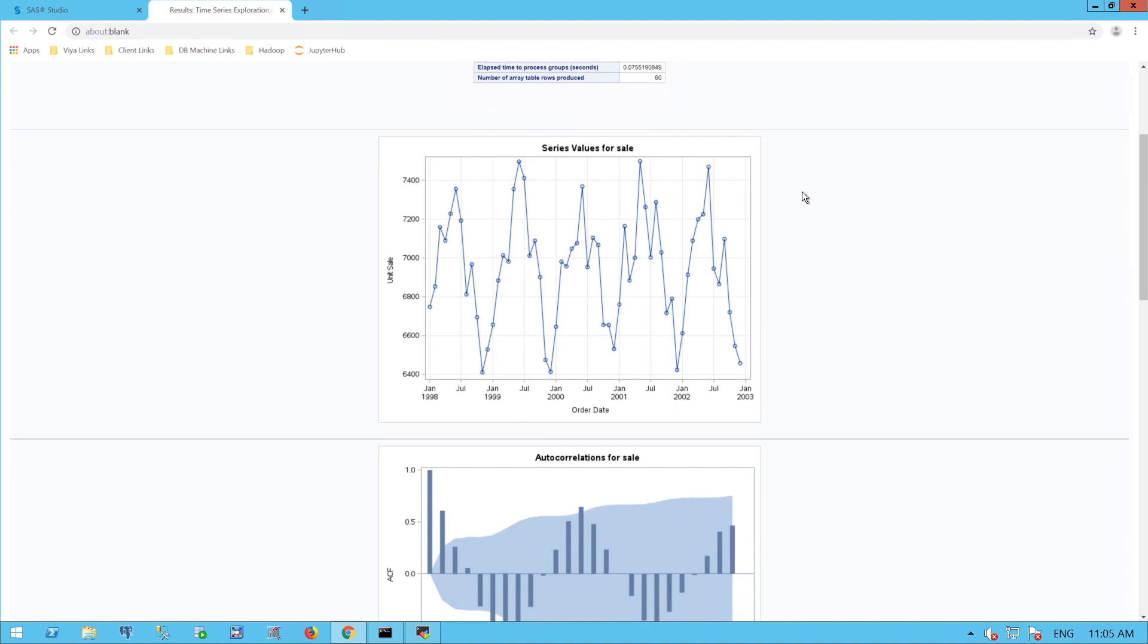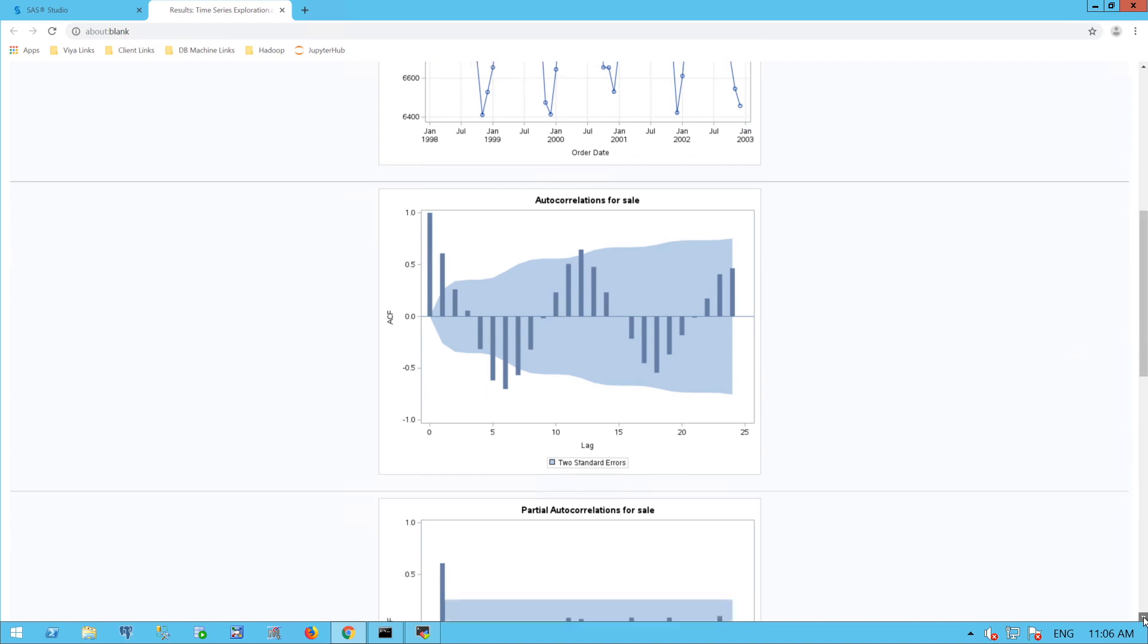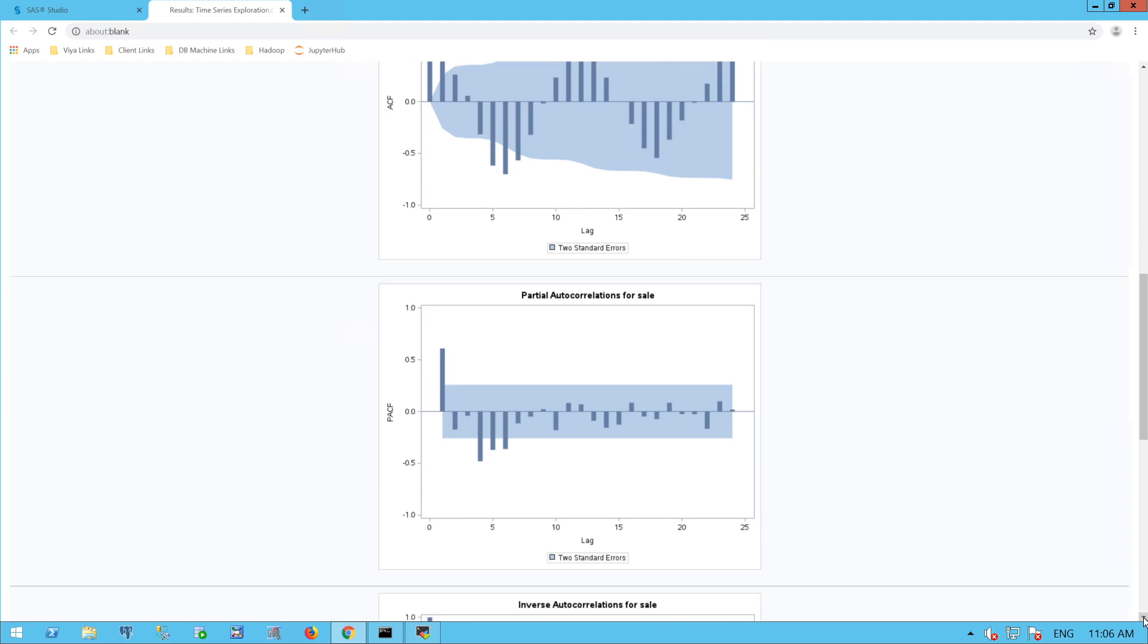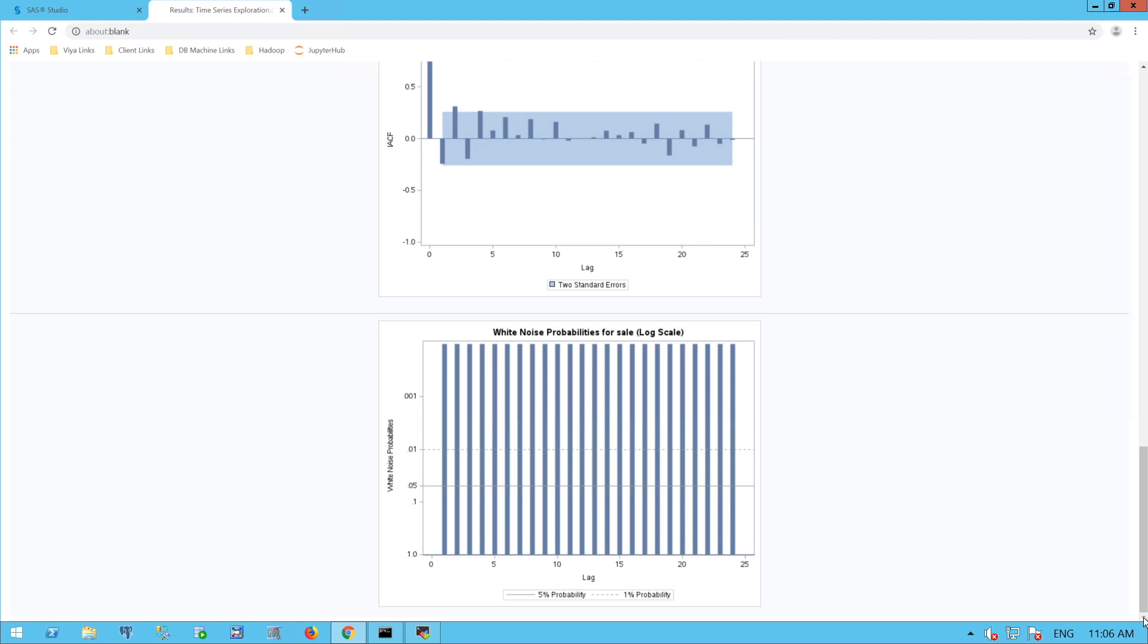Next, I have my series values. And you can see this runs from January 1998 to January 2003. And I can see these little circles are my individual data points. Here's my autocorrelations for my sale variable, my dependent variable. And as I scroll down, I can see my partial autocorrelations, my inverse autocorrelations, and my white noise probabilities. Let's look at each of these in a little bit more detail.